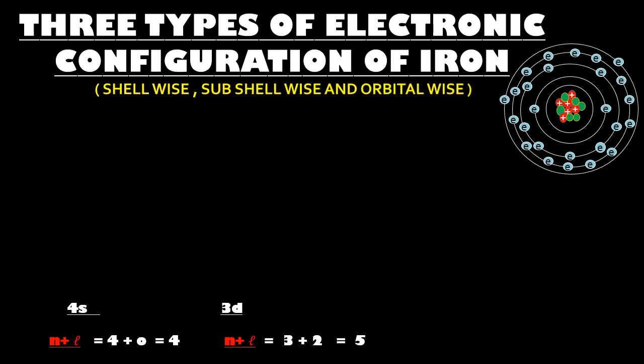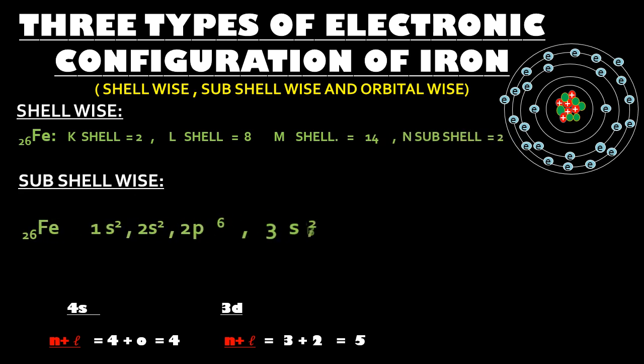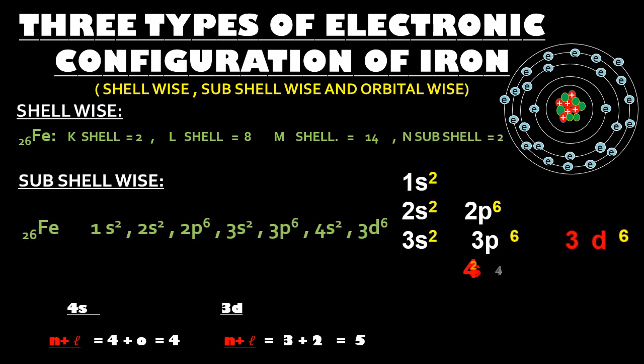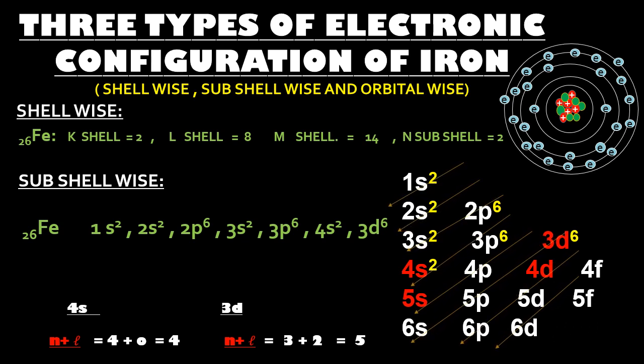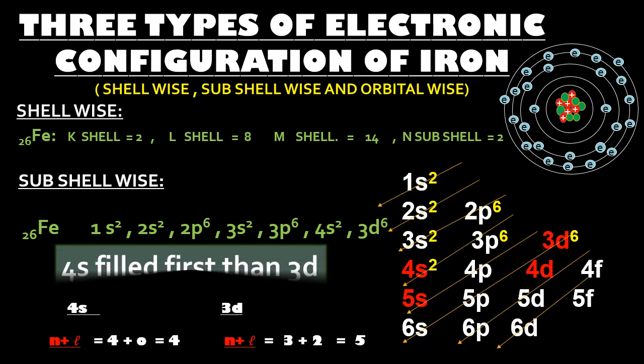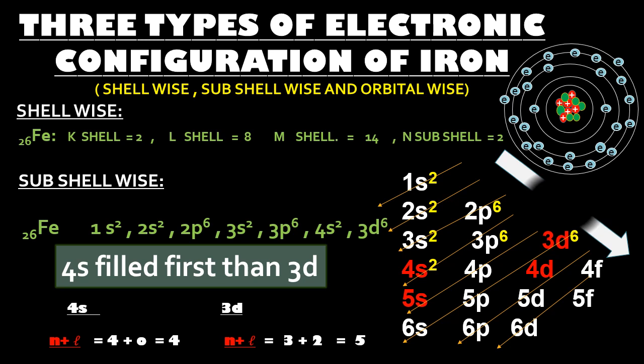Friends, let's try to find out the electronic configuration of iron. The shell-wise electronic configuration of iron having 26 electrons is K shell 2 electrons, L shell having 8 electrons, M shell 14 electrons, and the N shell having 2 electrons.